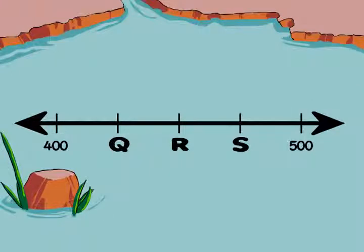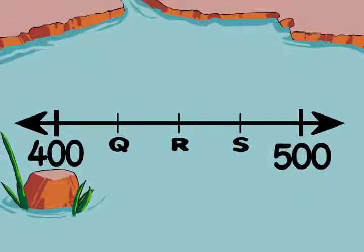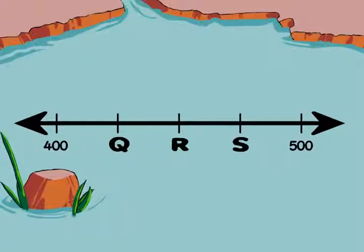Let's use this example. Step one, find the benchmarks and the interval. 400 and 500 are benchmarks. 500 take away 400 is 100, so the interval is 100.